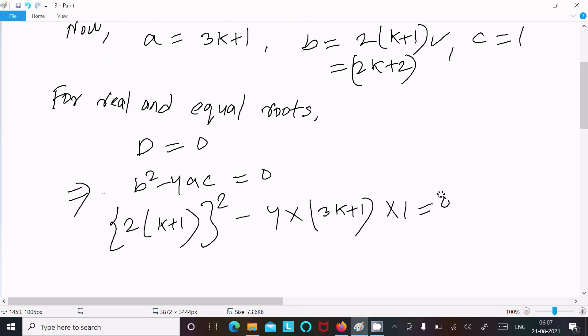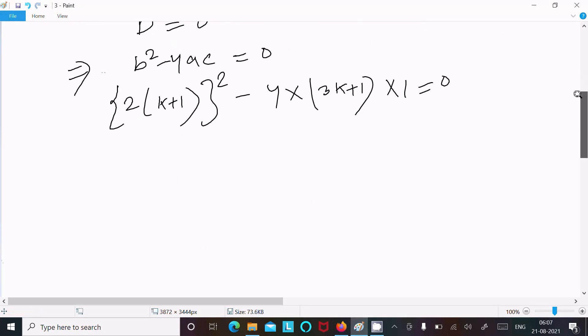So c value is now 1 = 0. Now here 2 square is 4, so 4(k+1)² and here 4(3k+1) = 0.